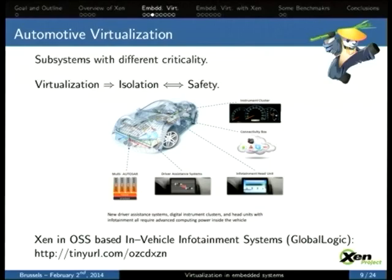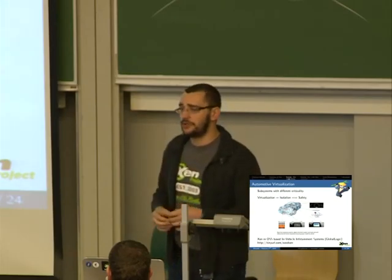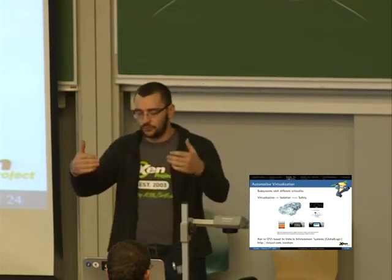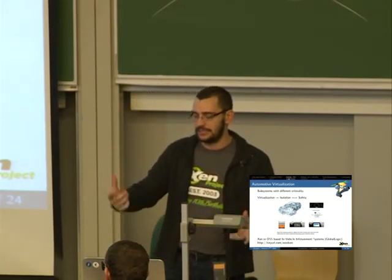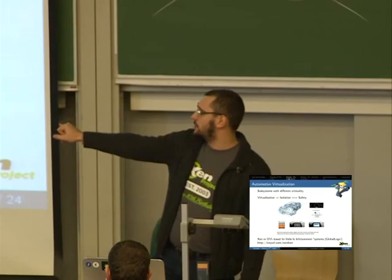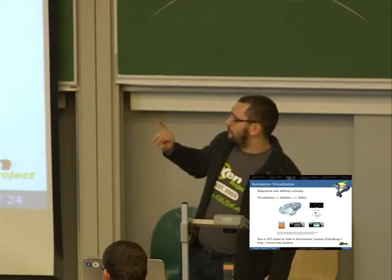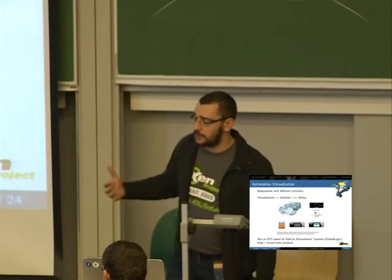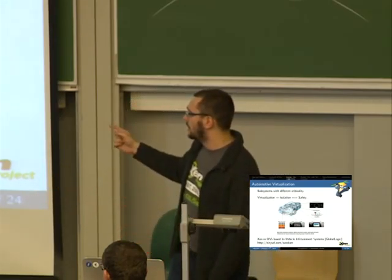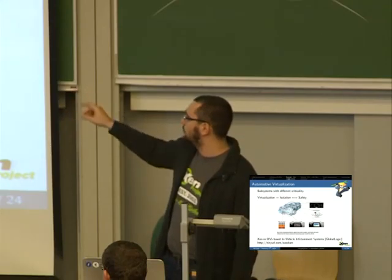The other use case is automotive. In a car you have to account for all the things needed to control the car's mechanical and electronic components, but you also want entertainment — kids watching a movie or playing a game with Android on a touchscreen embedded in the back of the driver's seat. That's the famous infotainment. GlobalLogic gave a presentation at the Xen Summit about this and is starting to be active in our community, sending patches and contributing work to the Xen open source project.